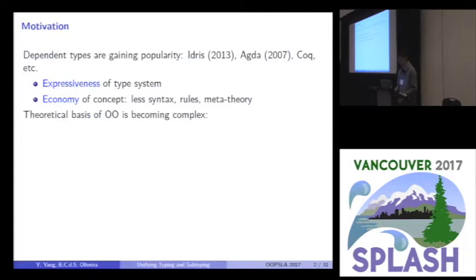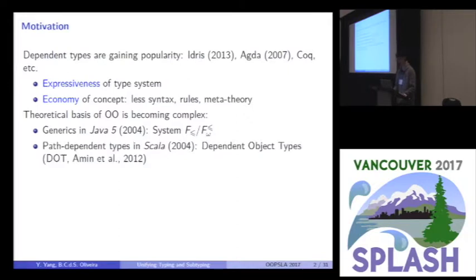On the other hand, in the object-oriented programming scene, the theoretical basis is becoming complex. For example, back in 2004, the generics in Java 5 needs at least the system F sub or F omega sub to formalize. And from the beginning of Scala, it supports path dependent types. And just like last talk, we need a more advanced calculus called dependent object types to deal with it.